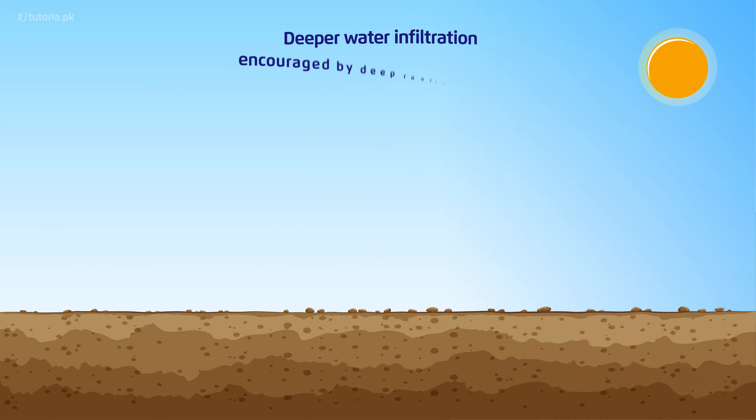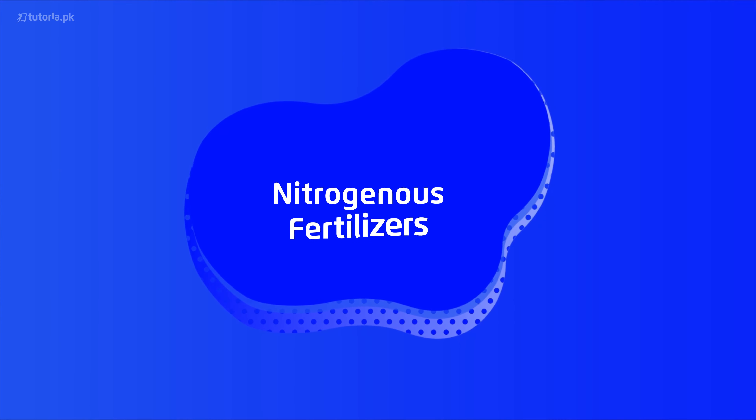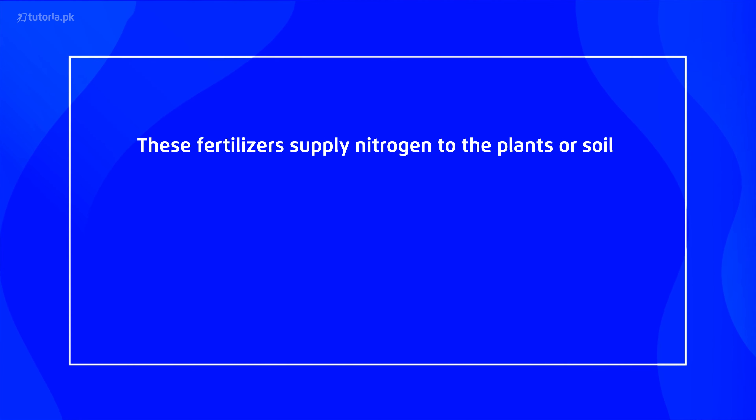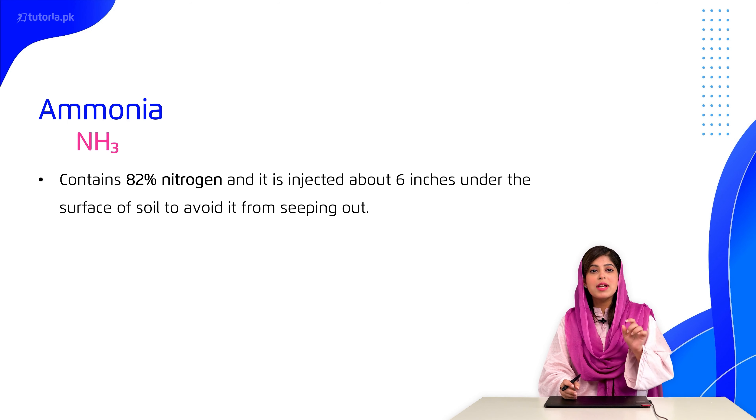We will now classify fertilizers and discuss them one by one. First are nitrogenous fertilizers, then phosphatic fertilizers, then potassium fertilizers. Nitrogenous fertilizers are those that essentially provide nitrogen to the soil. Remember that nitrogen plays a major role in protein development. Within nitrogenous fertilizers, we first discuss ammonia — it is used in liquid form and has the maximum percentage of nitrogen, that is 82%. Then urea, which contains 46% nitrogen and is the most concentrated solid nitrogen fertilizer.